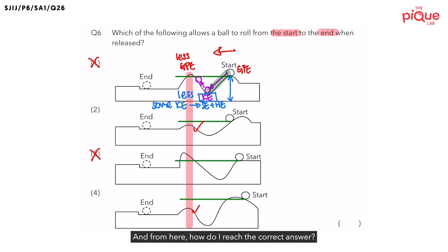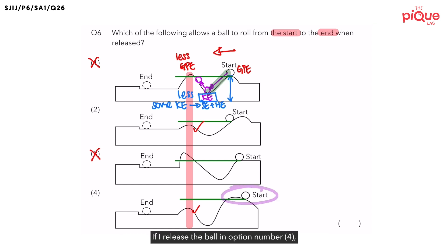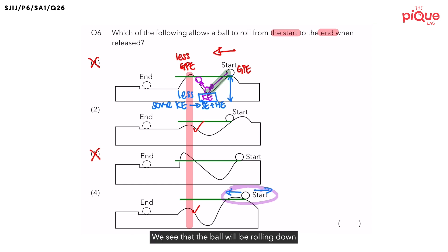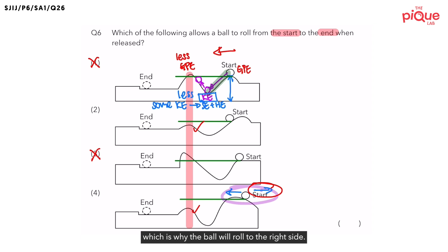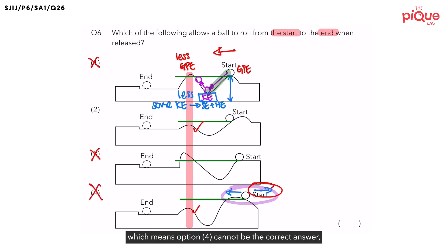We now have two possible answers. For those still unsure, look at the ball in option 4. If the ball in option 4 is released, it will roll down towards the right side because the ball is on a slope facing backwards. If the ball rolls to the right side, it will never reach the end point, so option 4 cannot be the correct answer. This leaves us with the correct answer: option number 2.